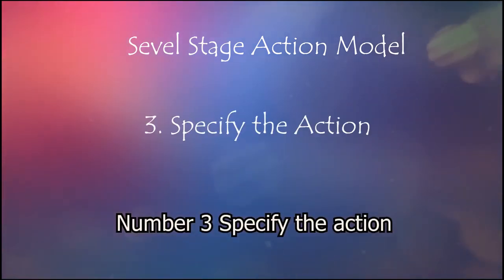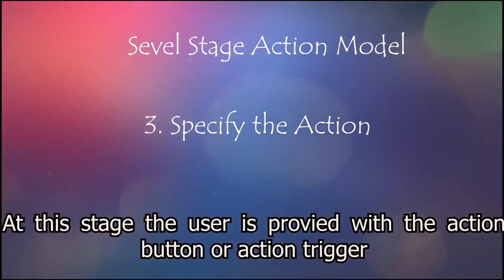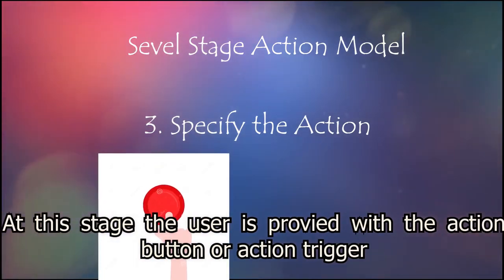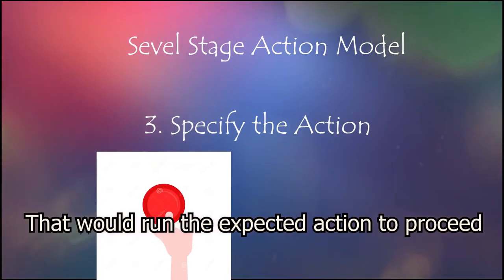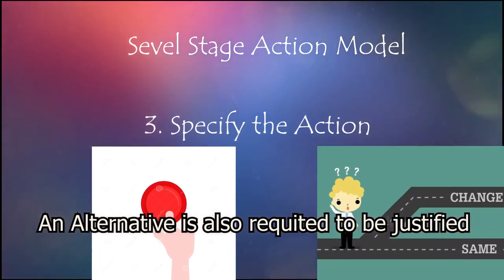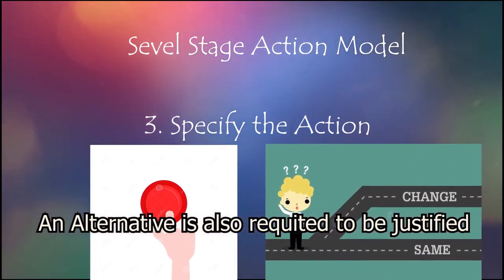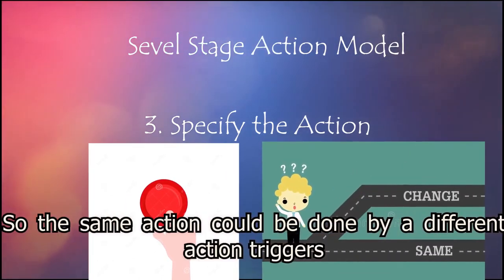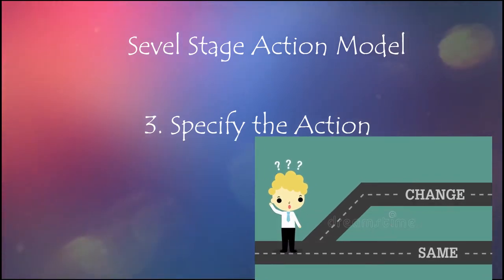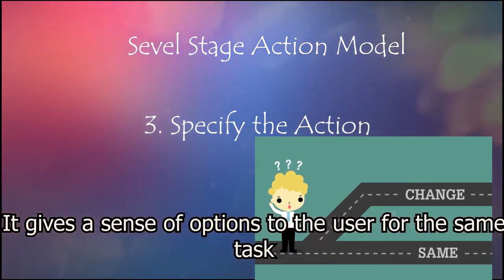Number 3: Specify the action. At this stage, the user is provided with the action button or action trigger that would run the expected action to proceed. An alternative is also required to be justified so that the same action could be done with a different set of action triggers. It gives a sense of options to the user for the same task.